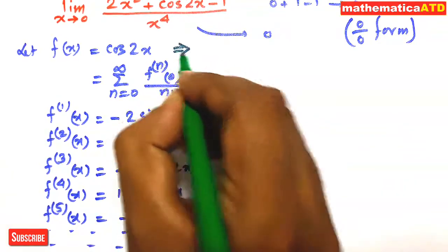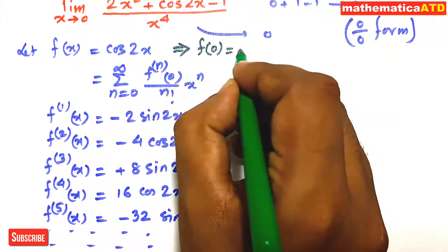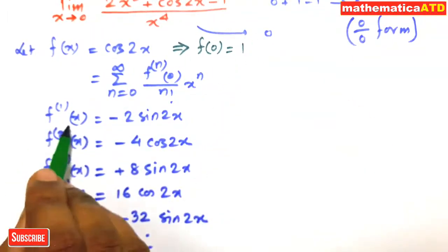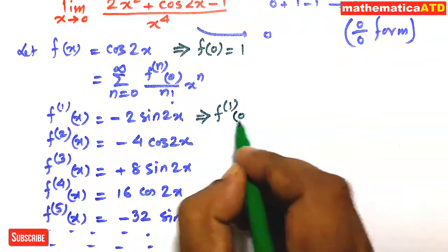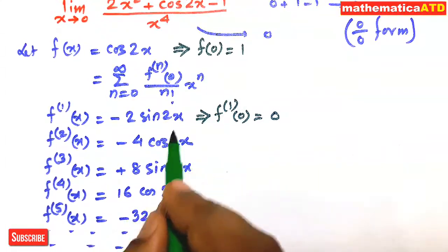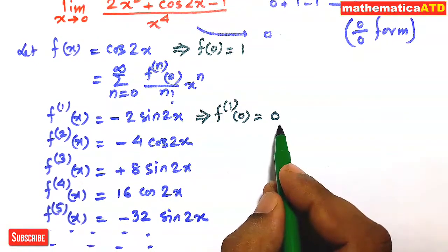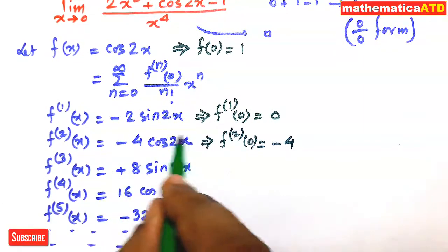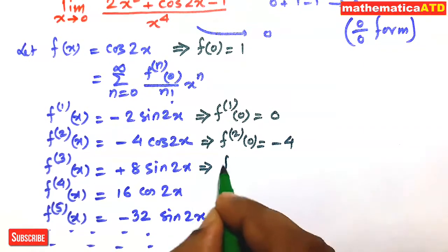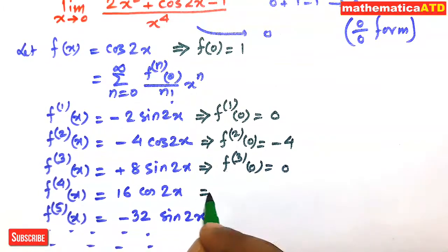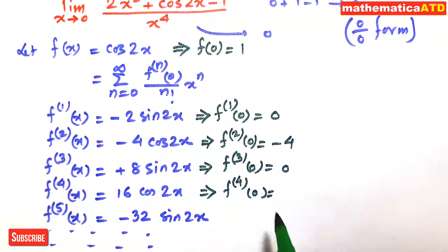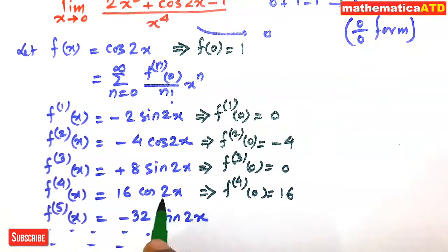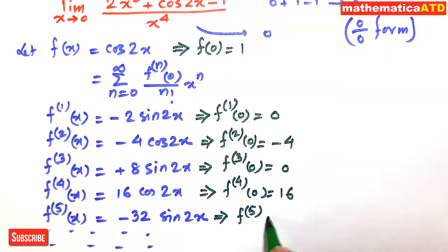Now evaluating at x = 0: f(0) = cos(0) = 1. From the first derivative, f'(0) = −2·sin(0) = 0. From the second derivative, f''(0) = −4·cos(0) = −4. f'''(0) = 0. From the fourth derivative, f''''(0) = 16·cos(0) = 16. From the fifth derivative, f'''''(0) = 0, since sin(0) = 0, and so on.